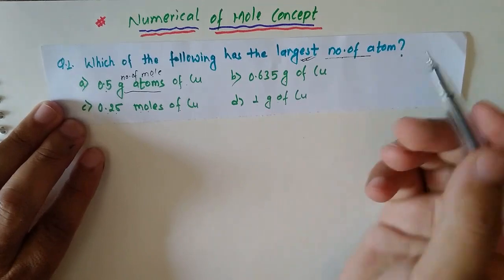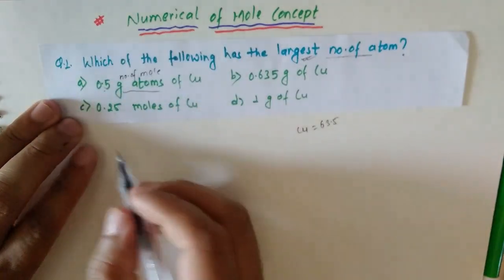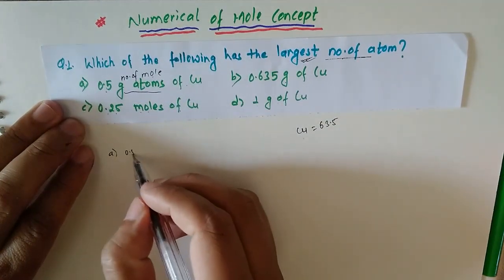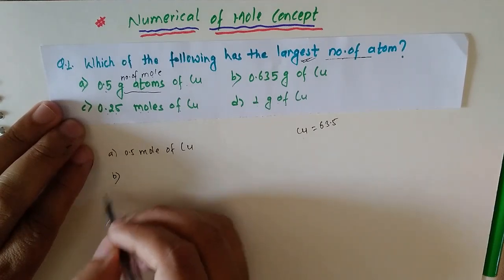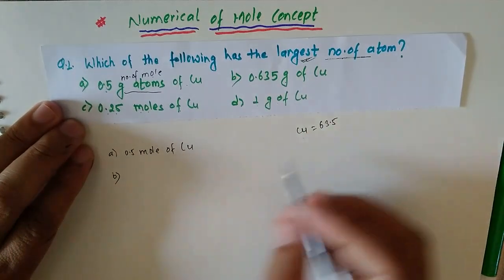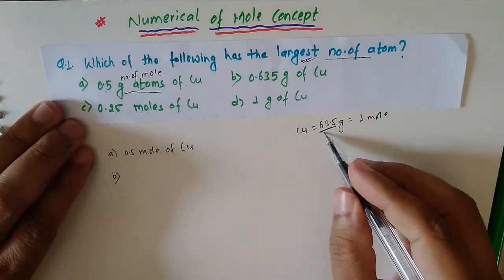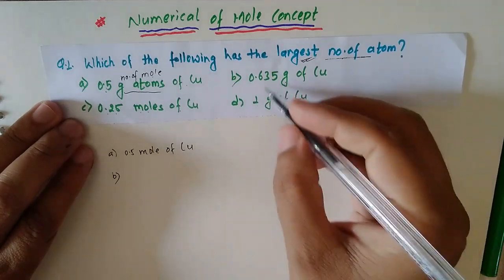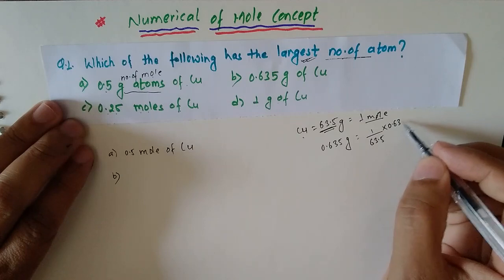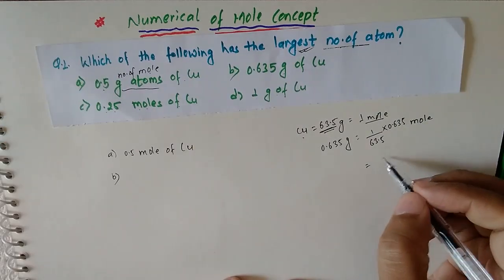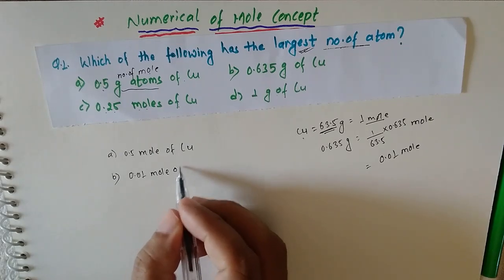The atomic weight of copper is 63.5. Option A: 0.5 gram atoms means 0.5 moles of Cu. Option B: 0.635 gram of Cu — since 63.5 gram of Cu means 1 mole, 0.635 gram means 1 divided by 63.5 into 0.635, which equals 0.01 mole of Cu.